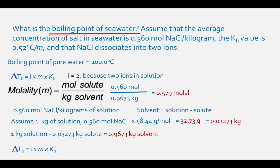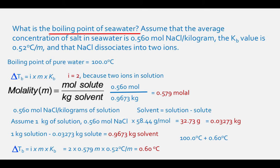To find the change in boiling temperature, multiply the Van't Hoff factor times the molality times the Kb constant: 2 times 0.579 molal times 0.52 degrees Celsius per molal equals 0.60 degrees Celsius. The boiling point of seawater is then 100.0 degrees Celsius plus 0.60 degrees Celsius, which equals 100.60 degrees Celsius.